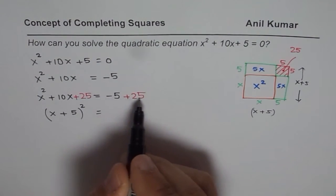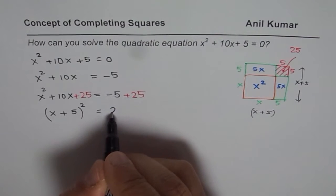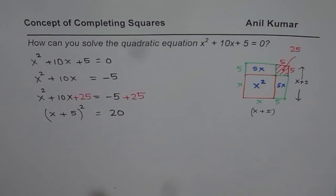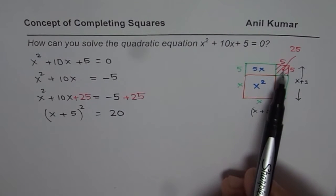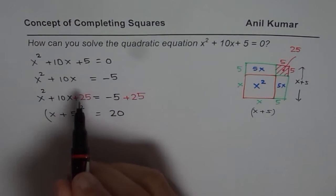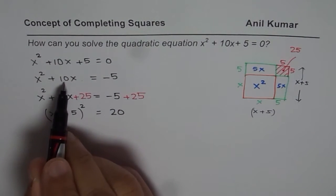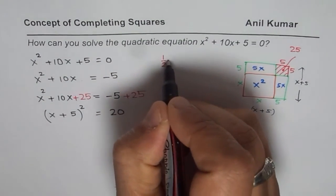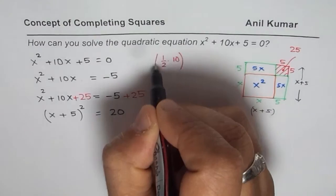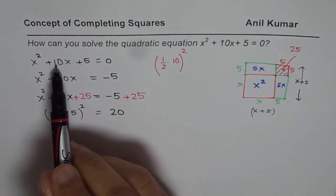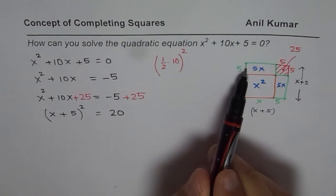I could write the left side as (x + 5)² and the right side is -5 + 25 = 20. That's how we complete the square. What you notice is that for completing the square, I added and subtracted a term which was half of 10, so 5².